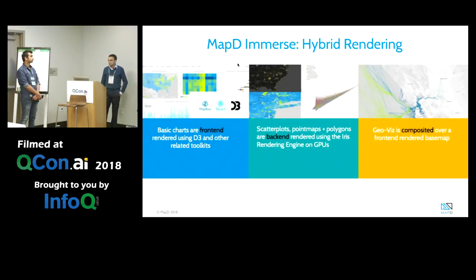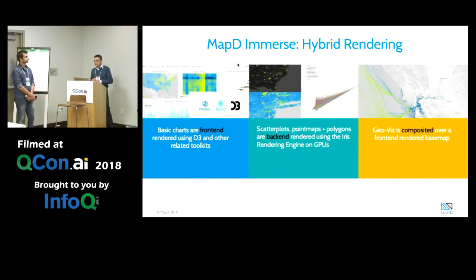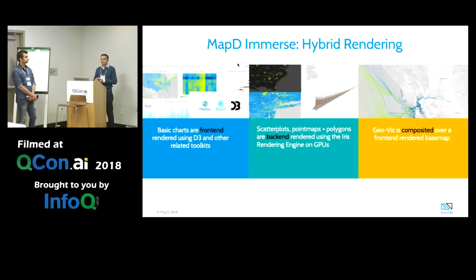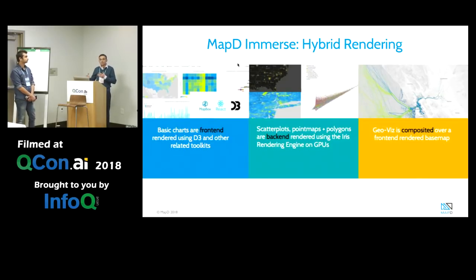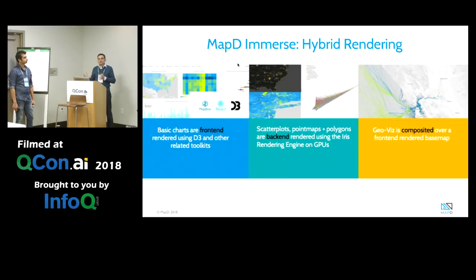On MapD Immerse, our visual front end, it makes use of the backend MapD Core database. We support very complex charts like point maps, scatter plots, and GIS representations. We also support standard charts like bar charts, line charts, and pie charts. The simple ones are rendered on the front end in the browser using D3. For the backend, we leverage the GPU graphics pipeline — we do the rendering, create a rasterized image, and send it to the client as a PNG file.